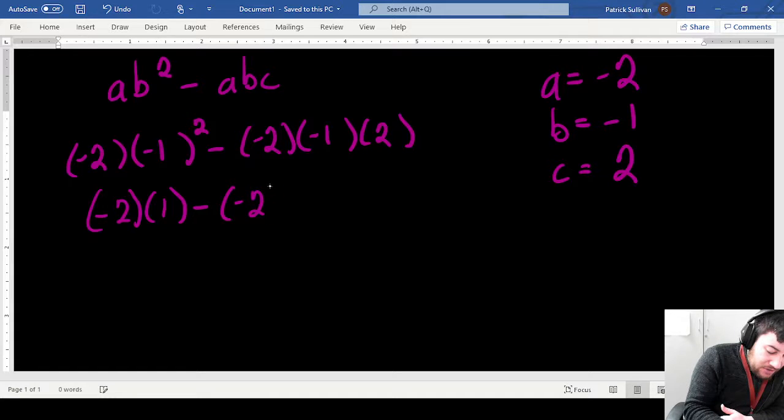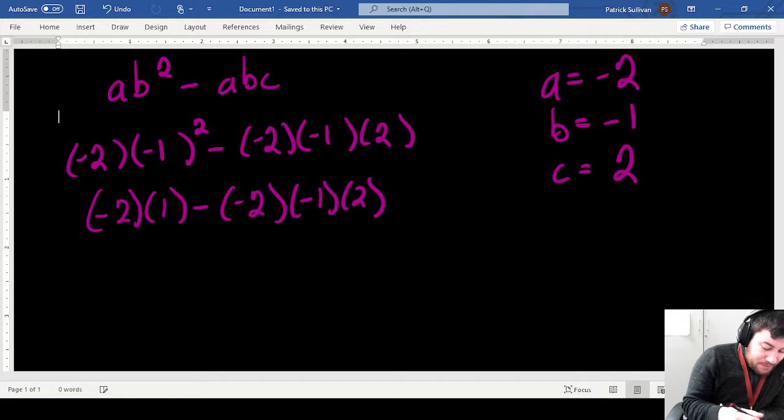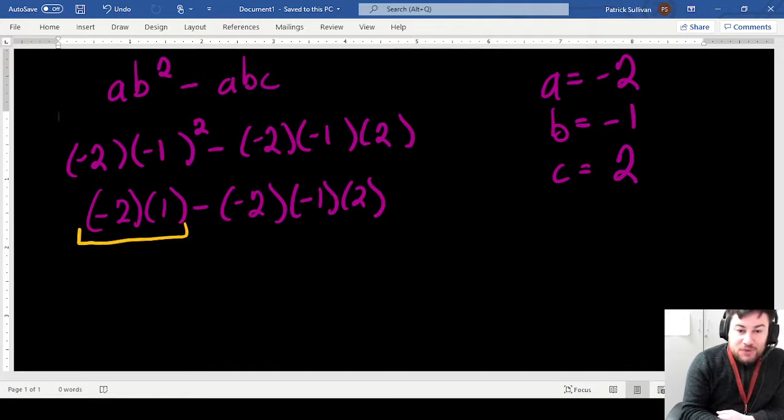all minus negative 2 times negative 1 times positive 2. Now this first portion right here of the expression, we'll swap to a different color, negative 2 times 1, that gives me negative 2.